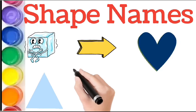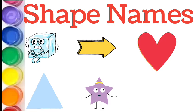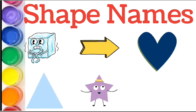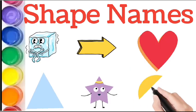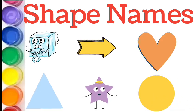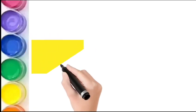Next one is five. Next one is circle. Circle just like a ball. And the next one is rectangle.